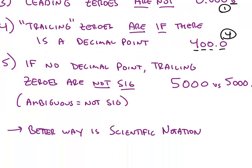When there's no decimal point, trailing zeros technically they're ambiguous, but ambiguous is going to mean that they're not significant. So for example, the number 5,000 versus the number 5,000 with a decimal point. In math terms, these are equivalent numbers, but in science, the first 5,000 without the decimal point only has one sig fig, where 5,000 with a decimal point has four sig figs.